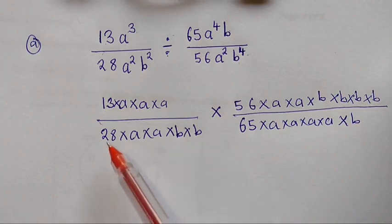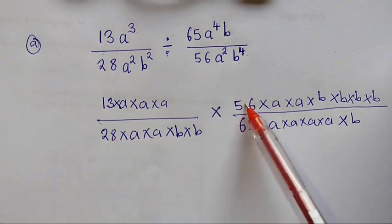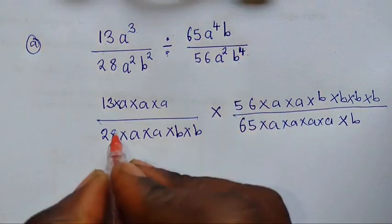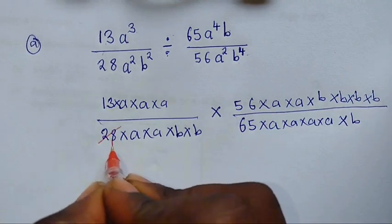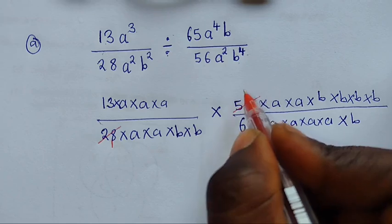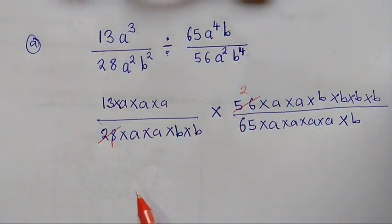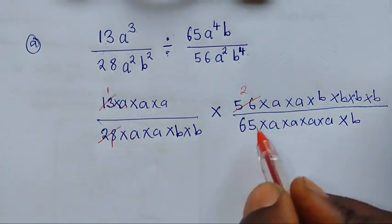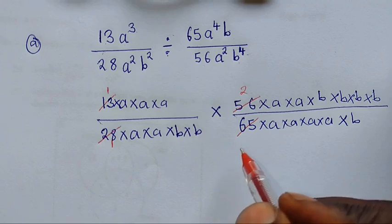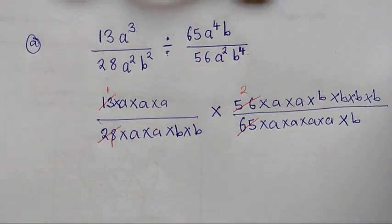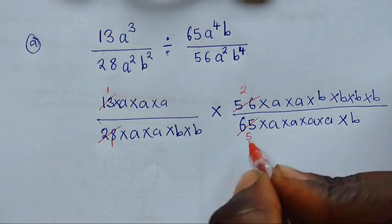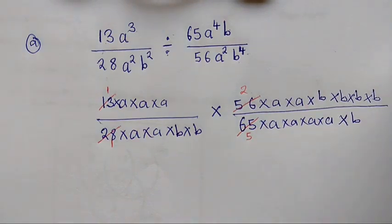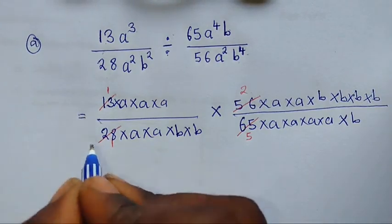You can see 28 and 56 — 28 goes into 56 two times, so 28 becomes 1 and 56 becomes 2. Then look at 13 and 65 — 13 goes into 65 five times, so 13 becomes 1 and 65 becomes 5.